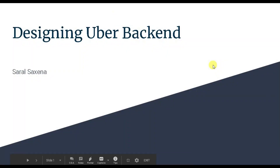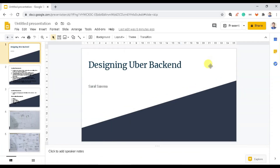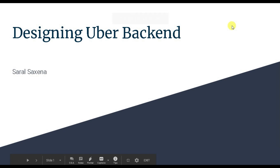Hello! This is Saral here. I'm starting with the Uber backend system design today. In a lot of interview questions, this question comes up: how does the Uber backend system work when a rider presses a button, selects source and destination, chooses a cab category like sedan or Go, and presses the button? What happens at the backend, how does the call reach a driver, how does the driver accept the request, and how does the journey complete with payment credited to the driver's account?